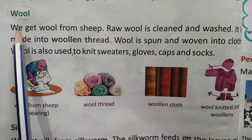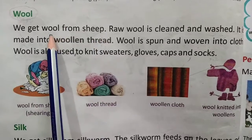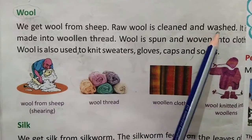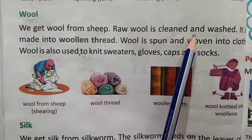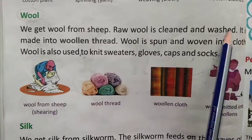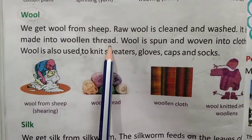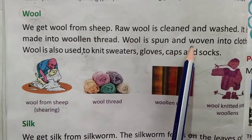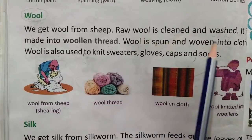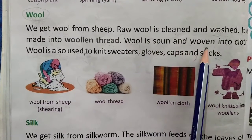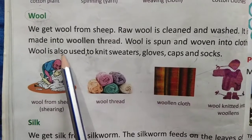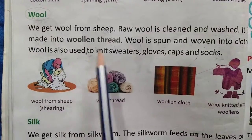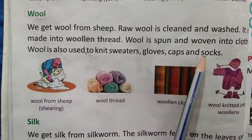We get wool from sheep. Raw wool is cleaned and washed, then converted into yarn. Wool is woven into cloth to make woolen clothes. Wool is also used to knit sweaters, gloves, caps and socks.